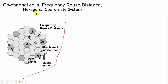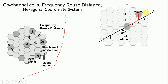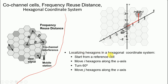Let us look into the hexagonal coordinate system. Localization of a hexagon in a hexagonal coordinate system is based on a set of procedures. First, select a reference cell. Then move I hexagons along the u-axis and J hexagons along the v-axis (after turning 60 degrees). For example, if I equals 2, we move two cells along u. Then turning 60 degrees, we move J cells — here J equals one. So we locate a hexagon from a reference cell using I steps on the u-axis and J steps on the v-axis.